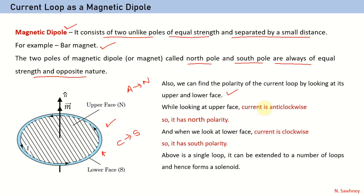When you look at the upper face, the current is in the anti-clockwise direction, so it appears as north polarity. When you look from the lower face, the same current appears in the clockwise direction, so it is south polarity. If you look carefully, this is a single loop. If the number of loops are increased, it will form a solenoid, and we know how to find the polarities of a solenoid by the clock face rule.